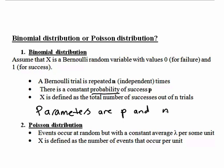Let's contrast this with the Poisson distribution. With the Poisson distribution, events occur at random but with a constant average lambda per some unit, where this unit could be time, length, or area, just for a few examples. X is then defined as the number of events that occur per unit. The parameter for a Poisson distribution is lambda, and the key word is average when you are looking at whether something is a Poisson distribution. Let's now look at a couple of examples.